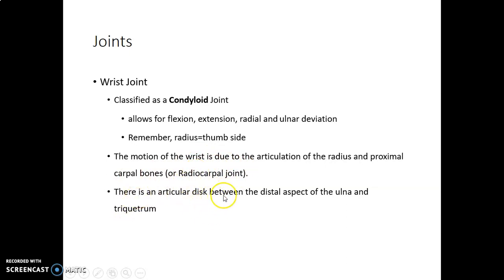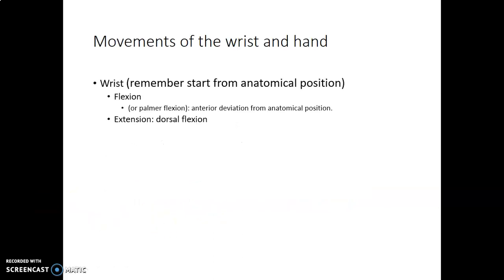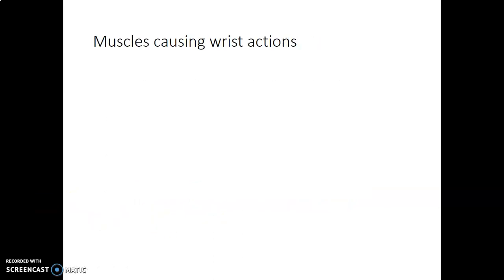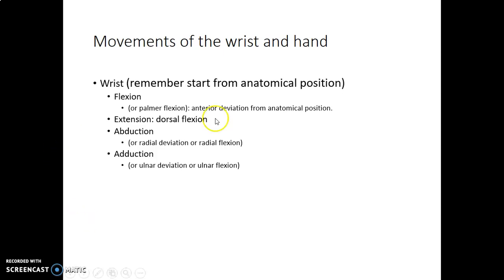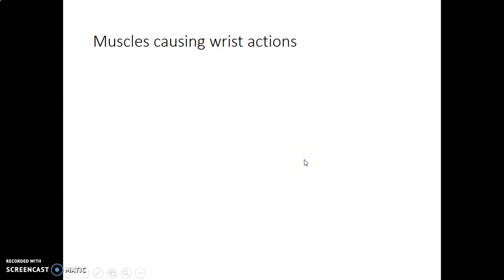There is usually an articular disc separating the distal aspect of the ulna from the triquetrum. The movements of the wrist are: flexion, also called palmar flexion; extension, which is dorsal flexion; abduction is radial deviation or radial flexion; and adduction is ulnar deviation or ulnar flexion.